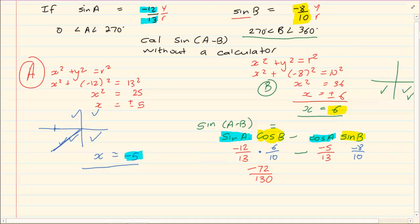And then we have minus times minus times another minus gives us minus. And we have 5 times 8 which is 40 over 130. So our final answer is minus 72 minus 40 which is minus 112 over 130.